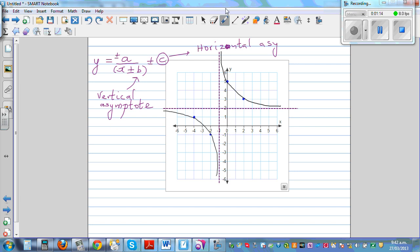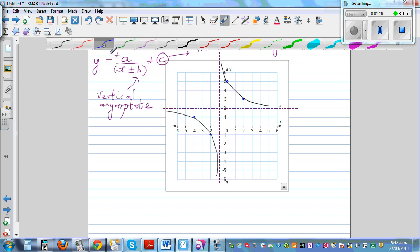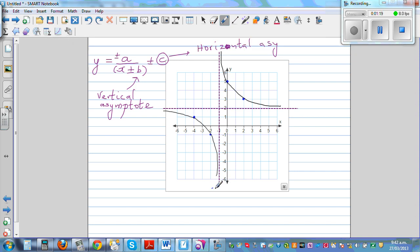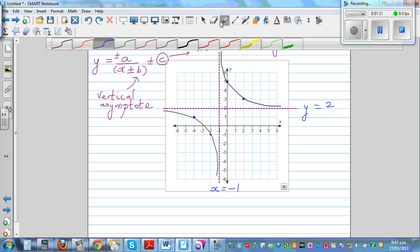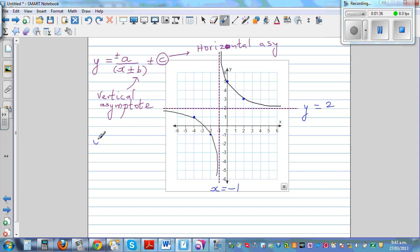So let's look at this graph and see what we can identify. The vertical asymptote is x equals negative 1, and the horizontal asymptote is y equals 2. Once you have this, you can write the equation: y equals a over x plus 1, plus 2. I'll explain the math behind this.